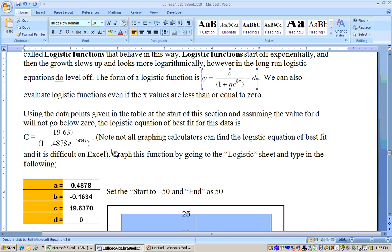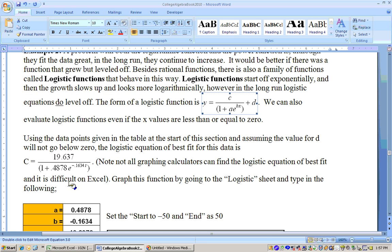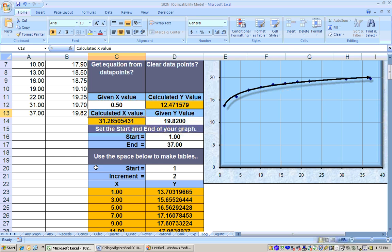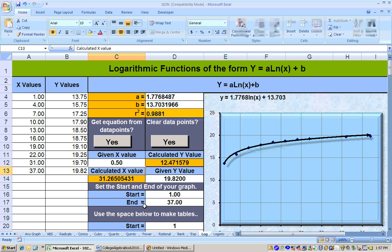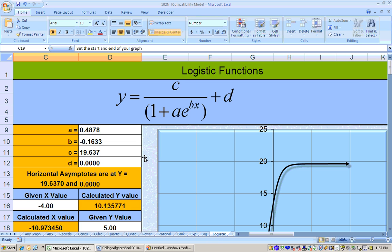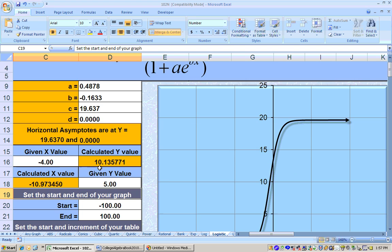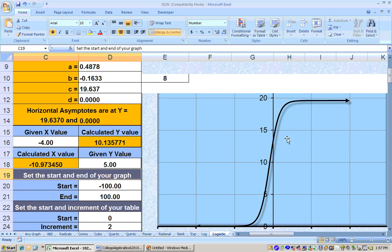I put these coefficients into the logistic sheet. This is your A, the 0.4878. The B is the exponent right here, which is negative 0.1634. The C is the number on top, 19.637. And D is any constant at the end, which would be 0 for us. I'm going to go to my logistic sheet and type those values in for A, B, and C. And D was 0. Now we get a graph that looks like this.